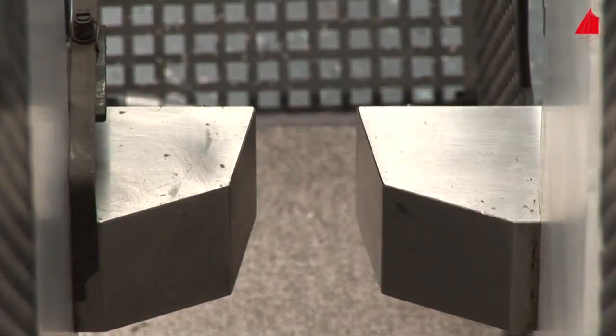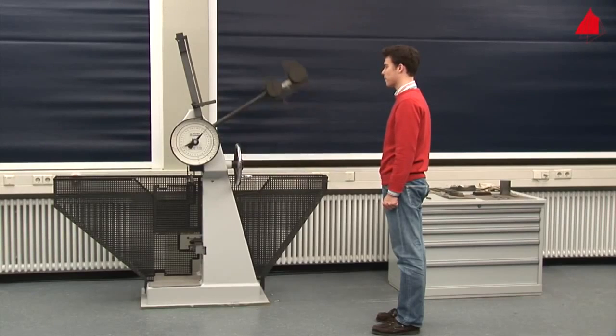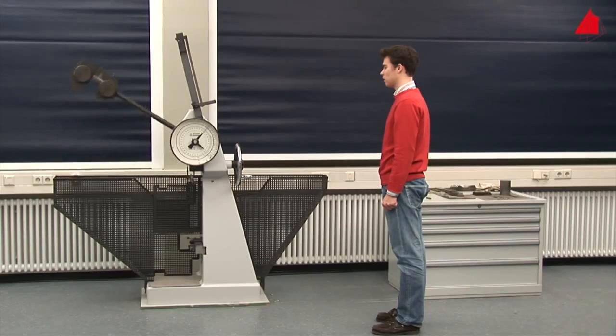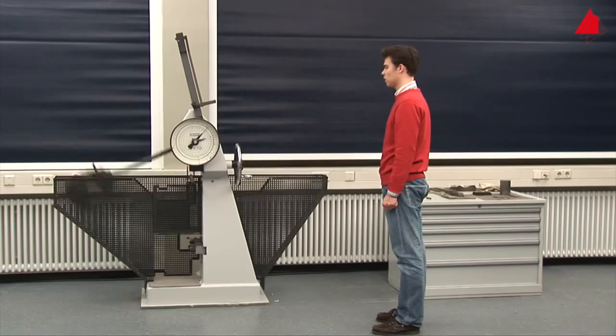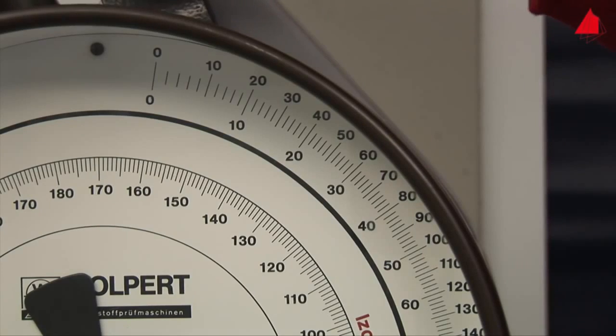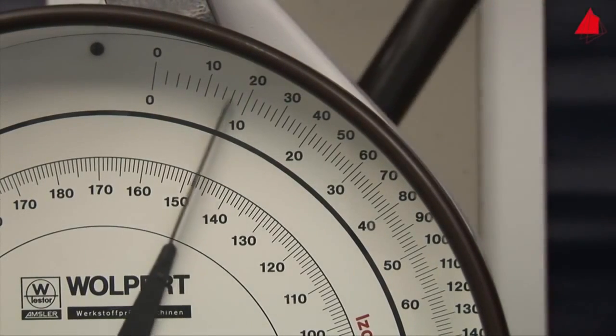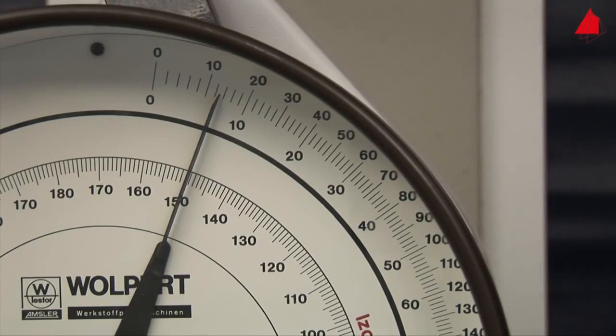It swings downwards and hits the specimen with its rounded hammer pin. The specimen absorbs part of the pendulum's energy so the pendulum doesn't reach the full height on the other side. The amount of energy that has been absorbed by the specimen can now be read off at the position of the drag indicator. It only amounts to 13 joules in this test.